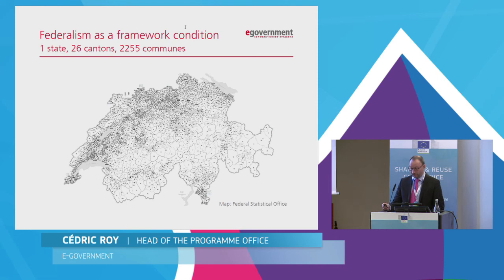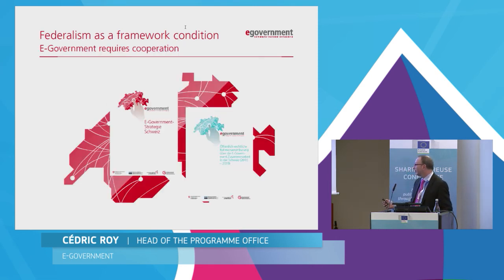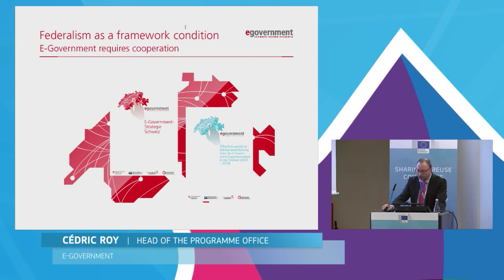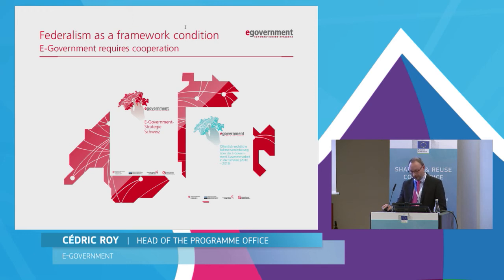My first example will be precisely e-government Switzerland. The confederation, the cantons, and the communes are pursuing a joint e-government strategy. They have agreed to four strategic aims: service orientation, usefulness and effectiveness, innovation and promotion of the Swiss economy, and sustainability.